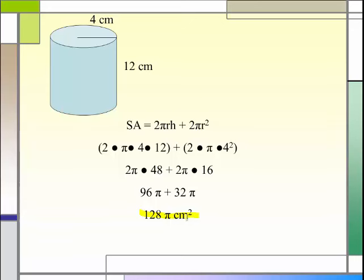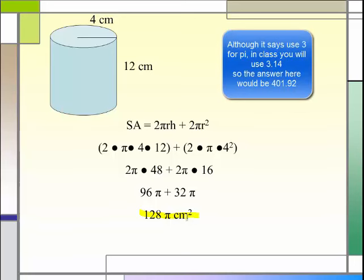Now, if it said it wanted you to use 3 for π or it said estimating, now is the time when you would do 128 times 3. And that would give you 384 centimeters squared. Since it's an area, it's still squared.